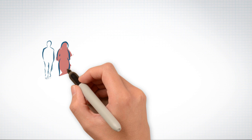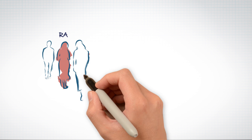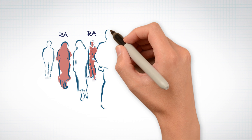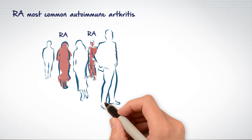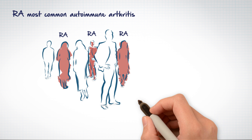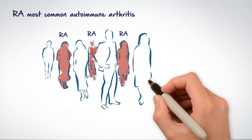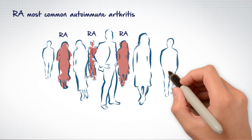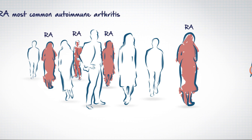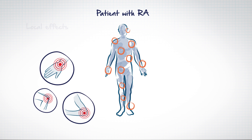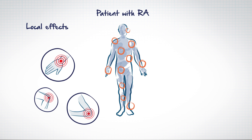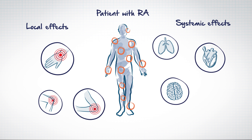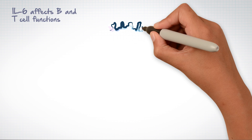Among autoimmune diseases, rheumatoid arthritis, or RA, is the most common type of autoimmune arthritis. It is triggered by a faulty immune system and manifests itself through both local effects in the joint and systemic effects around the body.